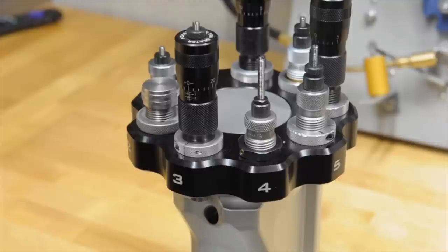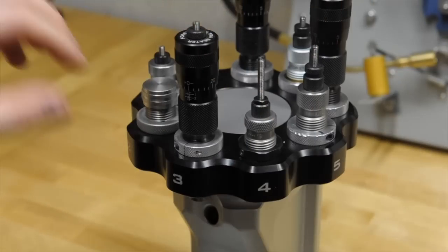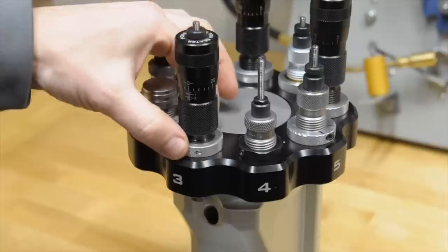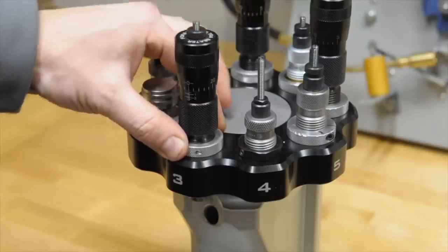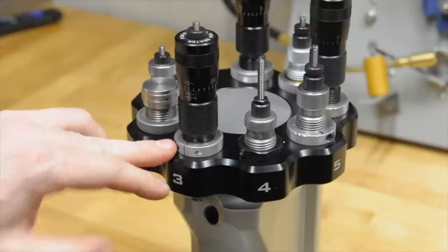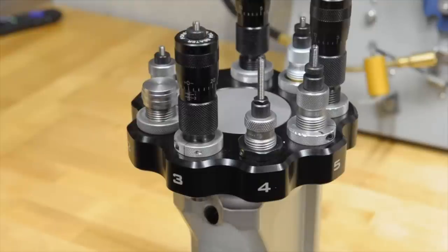Simple, cheaper single stage presses like a rock chucker from RCBS, a Lee lock and load, they're going to have basically just one station. So you're going to change your dies out based on what you're using. So these lock rings are really going to come into play there where you're going to screw those in, set those, tighten them down, leave them, because you're going to have to change them out all the time. You may have to go back through and do a little setup or checking. I don't have one, haven't used one. I started with a coax and just upgraded to this zero.